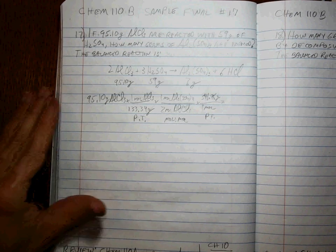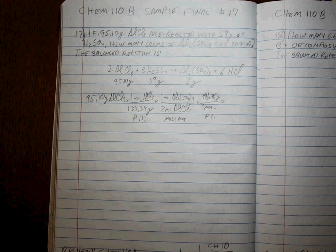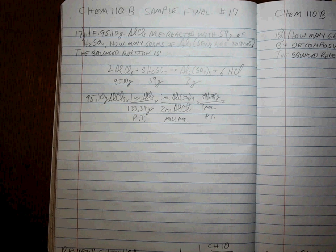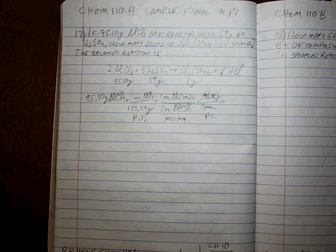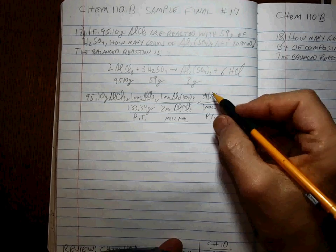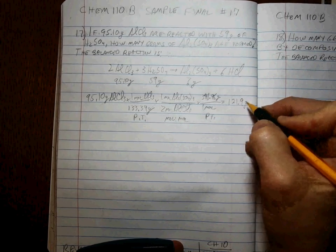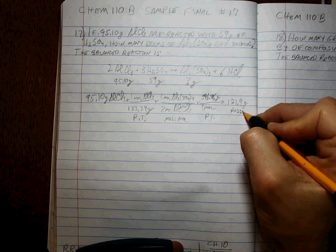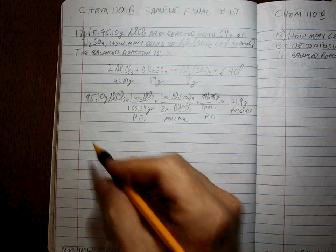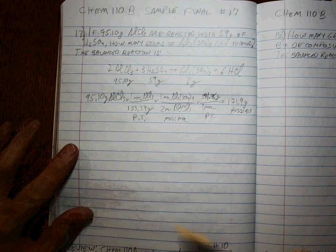What is that value? Well, let's calculate 95.1 divided by 133.34 divided by 2 times 341.96. And that to four sig figs is 121.9 grams possible. We're not sure yet, because we have to check the other value to see if maybe that one's the limiting reagent. So let's see,